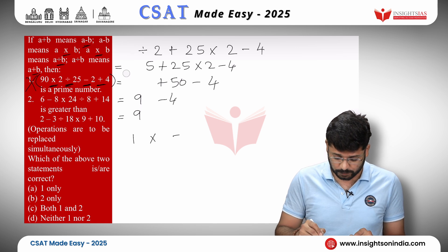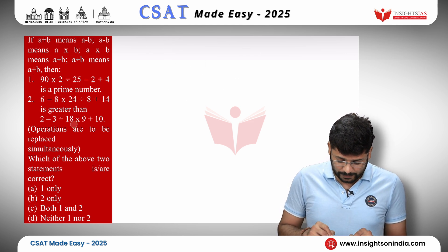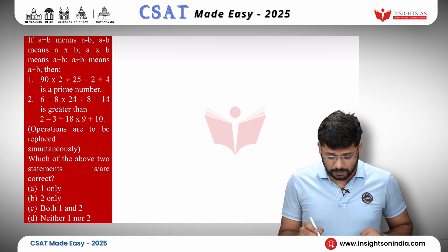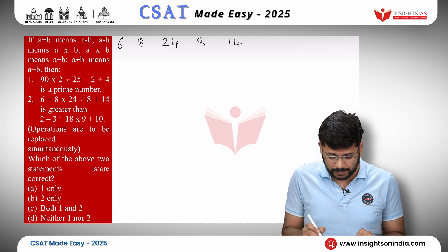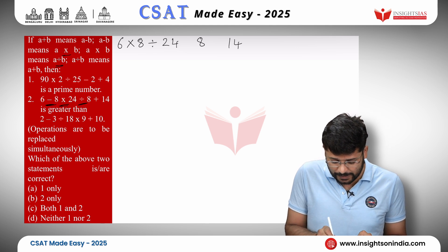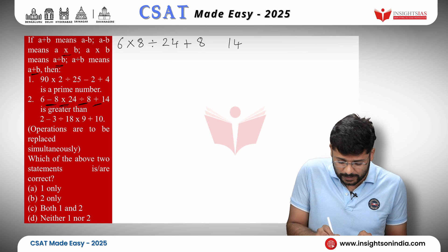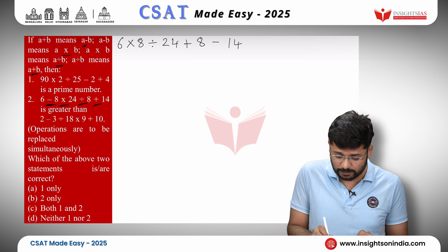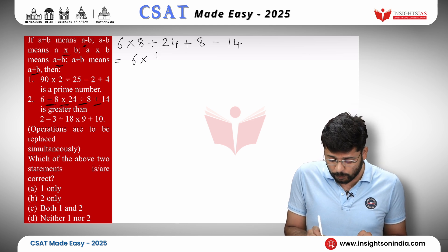Now let us solve statement 2. We need to evaluate two expressions and compare them. The first expression is 6 minus 8 into 24 divided by 8 plus 14. After substituting: minus becomes into, into becomes divided by, divided by becomes plus, and plus becomes minus. We apply BODMAS — division first: 8 divided by 24 gives 1 by 3. We keep the rest as is.